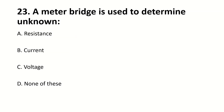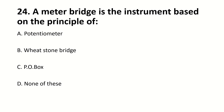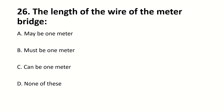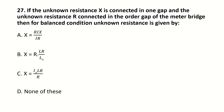A meter bridge is used to determine — unknown — blank. Right answer is A: resistance. A meter bridge is an instrument based on the principle of — blank. Right answer is B: Wheatstone bridge. A meter bridge is also called — blank. Right answer is A: slide wire. The length of the wire of a meter bridge is — blank. Right answer is B: must be 1 meter. If the unknown resistance X is connected in one gap and the known resistance is connected in the other gap of the meter bridge.